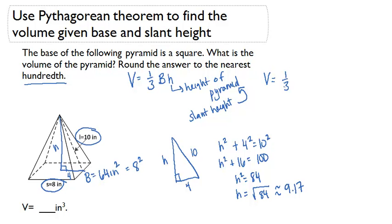So 1 third times 64 times 9.17. If I do the multiplication, I get volume equals 195, actually it's volume equals approximately, because it's not exact, 195.63. So I can say the volume of this pyramid is approximately 195.63 inches cubed.